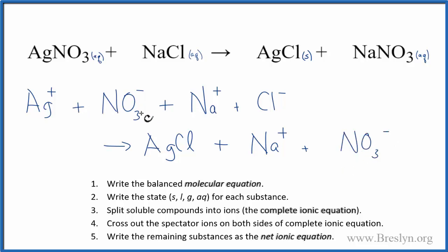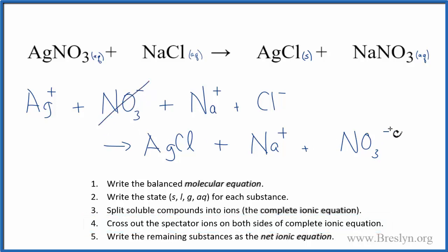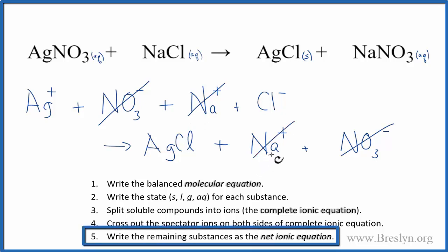And I didn't write the states after each of them at this point, because the next step is to cross out the spectator ions. So we see that we have an NO3, the nitrate ion on both sides. We can cross that out. Sodium, we can cross that out. And this is going to leave us with our net ionic equation.